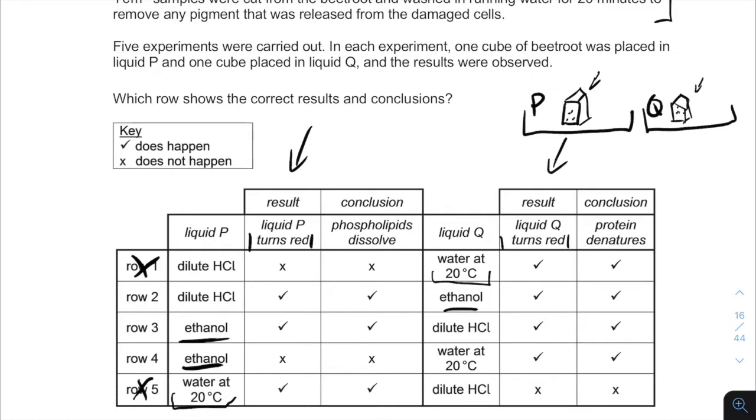So, phospholipids dissolve is true, so this is not true, and we can remove row four. So basically we have only rows two and three left.